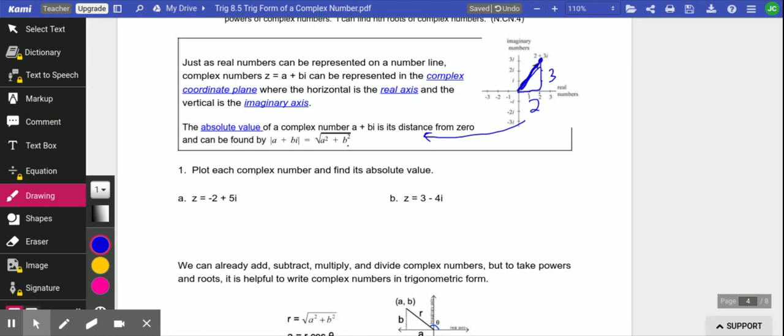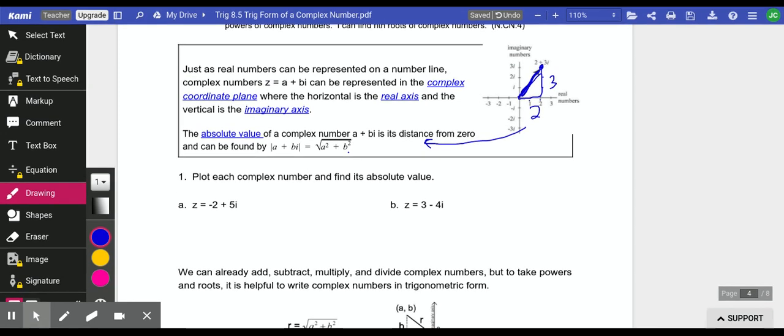Let's do a couple just like that. We're going to plot these numbers and find the absolute value. First we set up our coordinate plane. Negative 2, so 2 in on the real number line, and then 5i: 2, 3, 4, 5, and there it is.